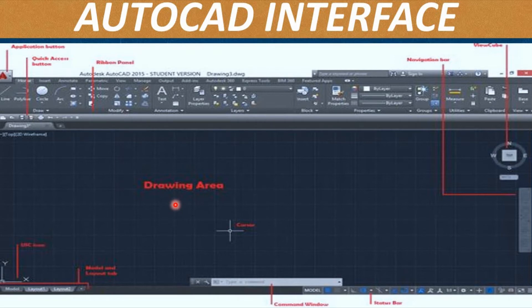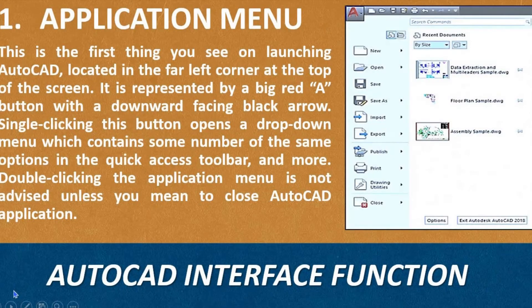Let's define the AutoCAD interface. First, Application Menu. This is the first thing you see on launching AutoCAD, located in the far left corner at the top of the screen. It is represented by a big red A button with a downward-facing black arrow. Single-clicking this button opens a dropdown menu which contains some of the same options in the Quick Access Toolbar and more. Double-clicking the Application Menu is not advised unless you mean to close the AutoCAD application.